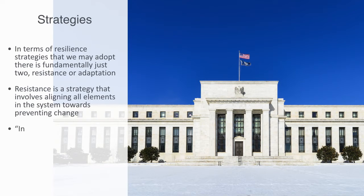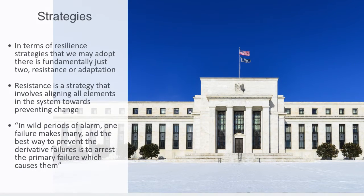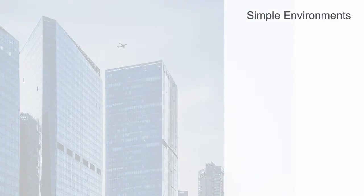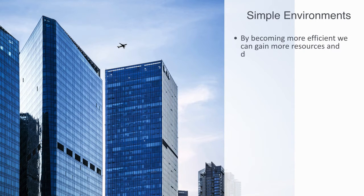In wild periods of alarm, one failure makes many, and the best way to prevent the derivative failures is to arrest the primary failure which caused them. This resistance approach is aligned with optimization, in that by becoming more efficient, we can gain more resources and develop a greater capacity to resist change.